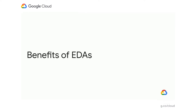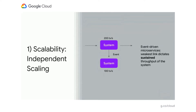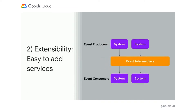EDAs solve several of the problems identified earlier. On scalability: consider two systems, one handling 200 transactions a second and another handling 100. With a synchronous microservices architecture, the weakest link dictates the peak throughput of the system. But with event-driven microservices, the weakest link now dictates only the sustained throughput. On extensibility, when we add another event consumer, no changes need to be made to any producer, making extensibility a lot easier.